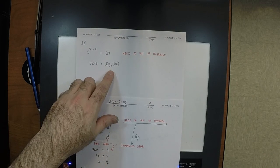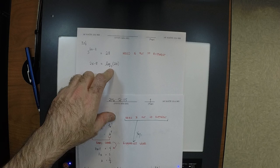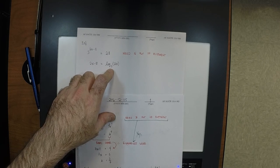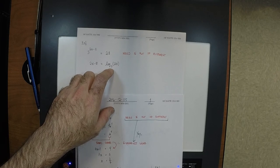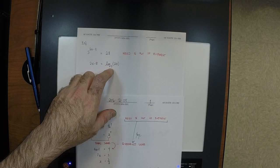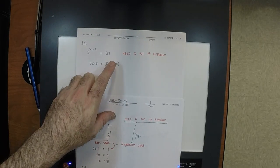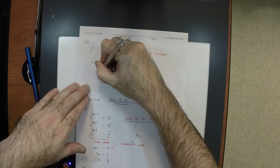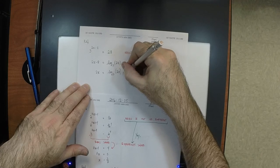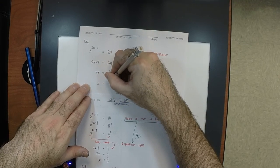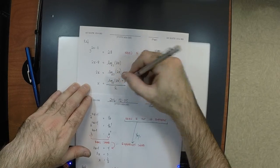You might not know what log base 3 of 28 is — but for now it's just a number, in the same way that square root of 13 is a number whose decimal places you might not know off the top of your head. Treat it as a number and solve: add 8, then divide by 2. So 2x equals log base 3 of 28 plus 8, and x equals (log base 3 of 28 plus 8) divided by 2. That's the exact answer.